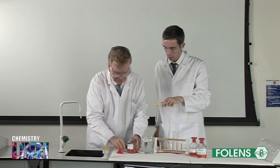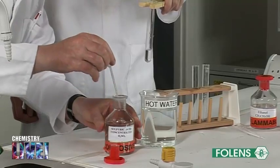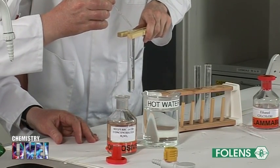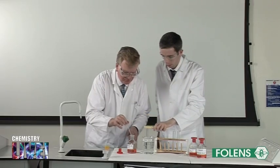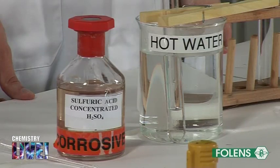Add 3 drops of concentrated sulphuric acid to the test tube. The sulphuric acid acts as a catalyst for the reaction between the ethanoic acid and the ethanol. Place the test tube in a beaker of hot water for about 10 minutes.